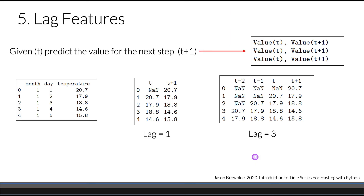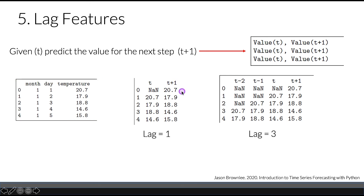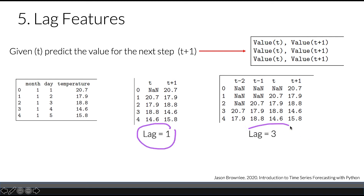Lag features are the classical way that a time series forecasting problem can be transformed into a supervised learning problem. The lag features are the target output shifted by a period of time — a day before, a week, or a month. The simplest approach is to predict the value at the next time step: given t, predict t+1. We shift the dataset by one, creating a t column and a t+1 column, adding a none value for the first row since the previous value is unknown. We can have lag of one, lag of three, etc.